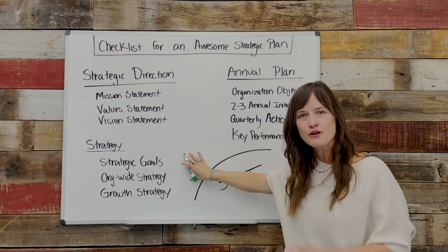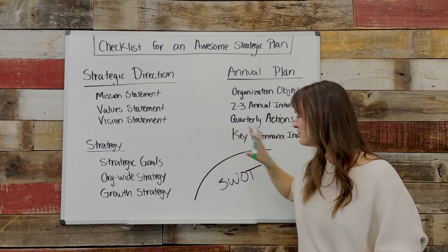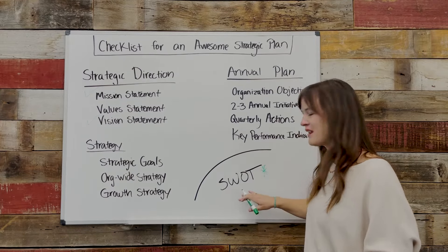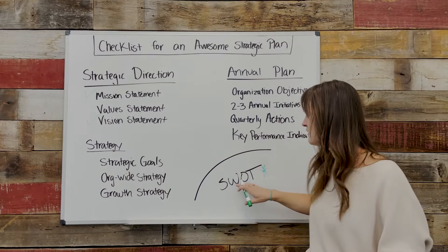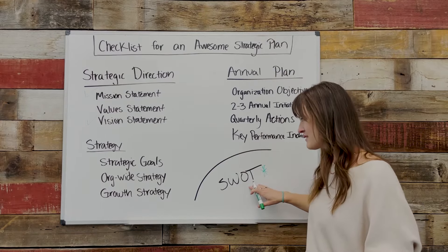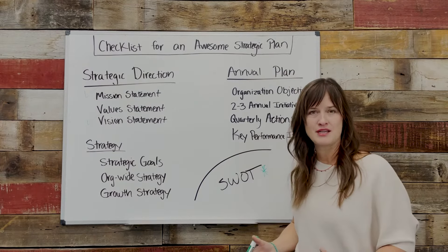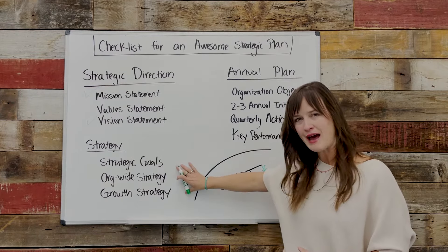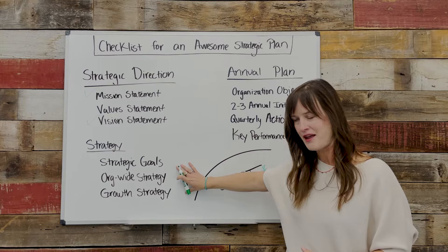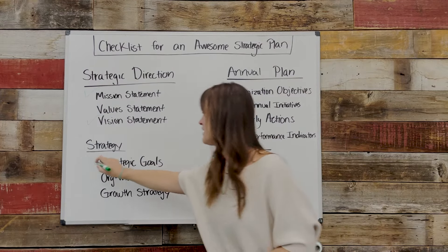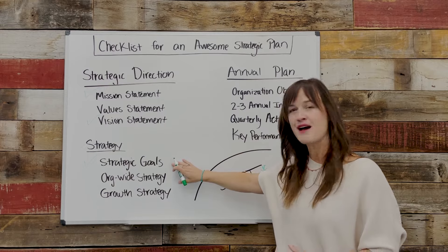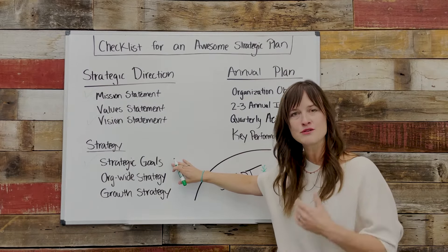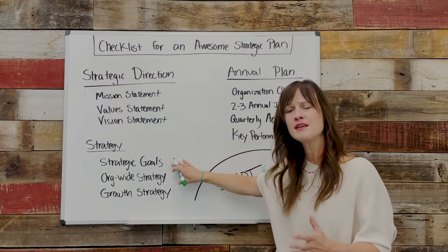Then we move to strategy. In order to articulate your strategy, you've got to understand where you are today. We use a trusty tool — a SWOT: strengths, weaknesses, opportunities, and threats. Once you have a clear understanding of where you are today and where the opportunities are for growth, you can build out the strategy areas of your plan, which look like your strategic goals — the four, five, or six big areas of focus that make up the framework of your plan. Super important — everything rises and falls. Your vision connects to your goals, and your goals connect to your objectives.